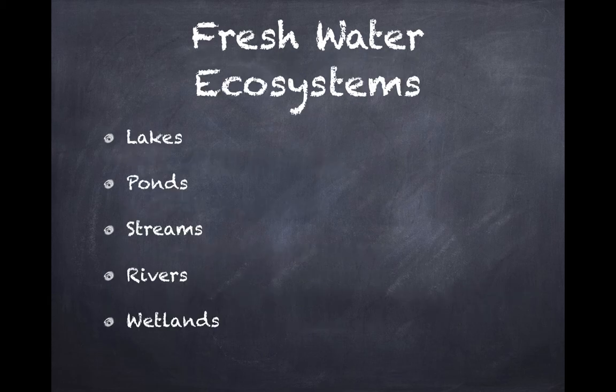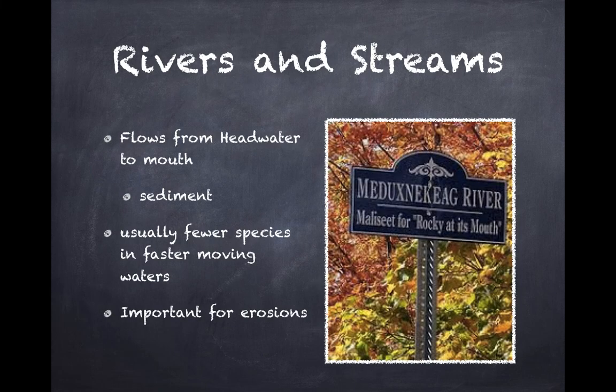Freshwater ecosystems are things you are more than likely familiar with — we have examples of all of these around here: lakes, ponds, streams, rivers, and wetlands. Starting with streams and rivers, like the Meduxnekeag that runs through town — waters in a river and stream will flow from the headwater, where the river starts, to the mouth, where they feed into another body of water: a lake, a stream, or the ocean.